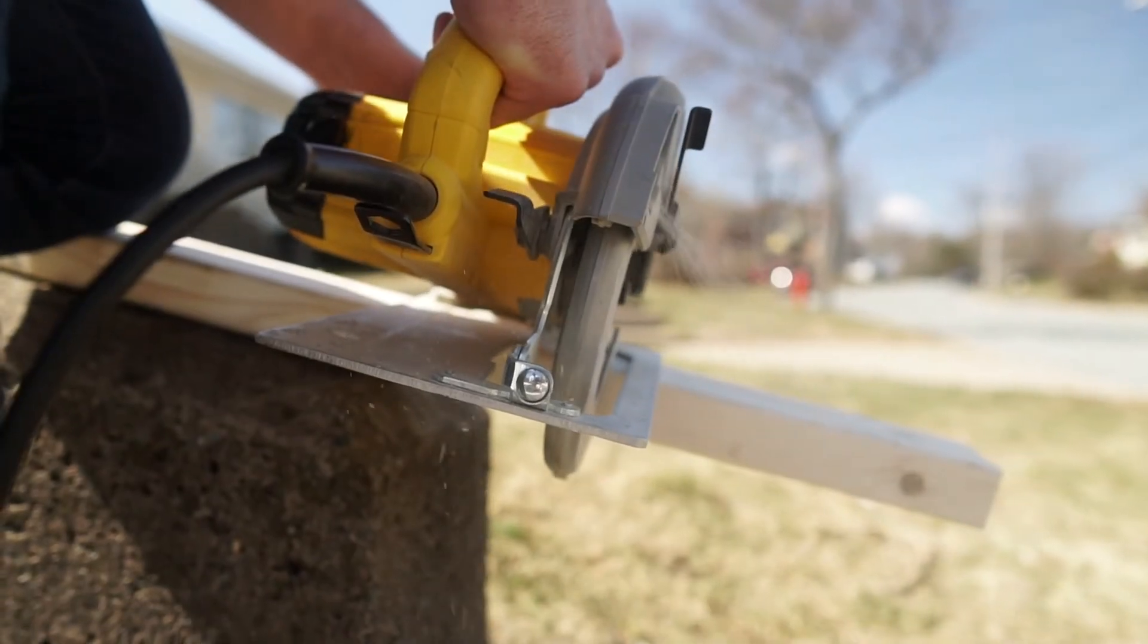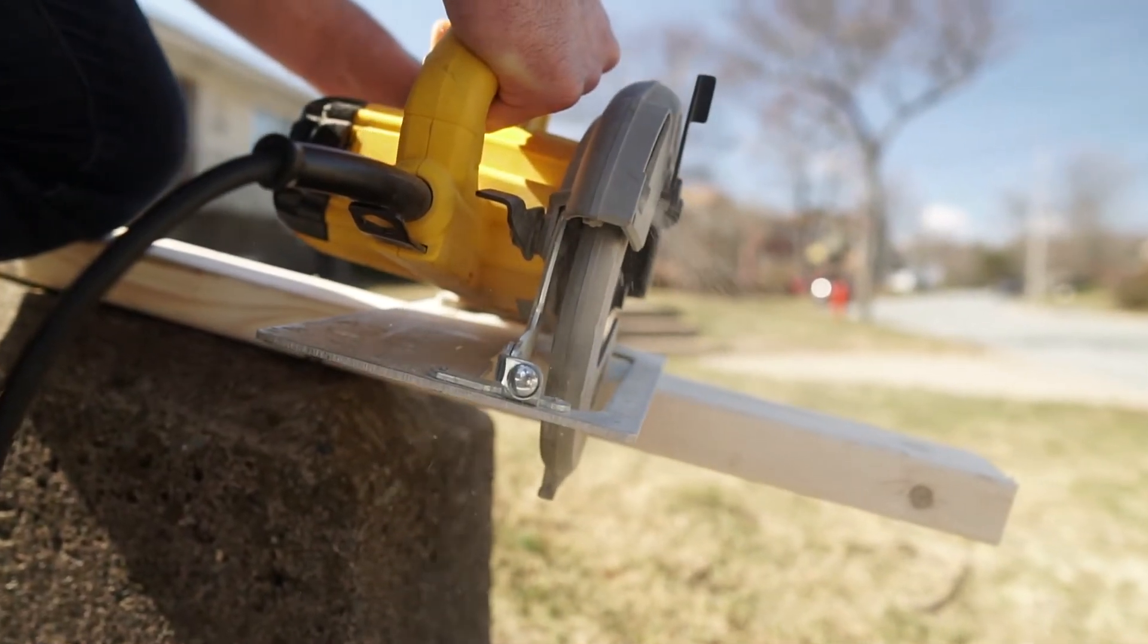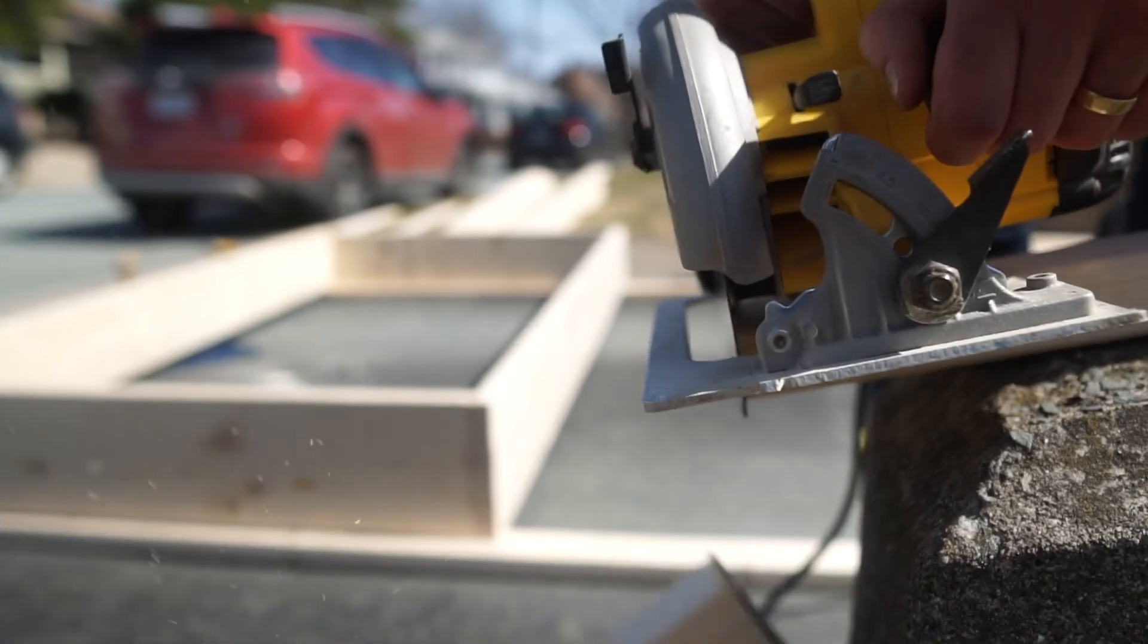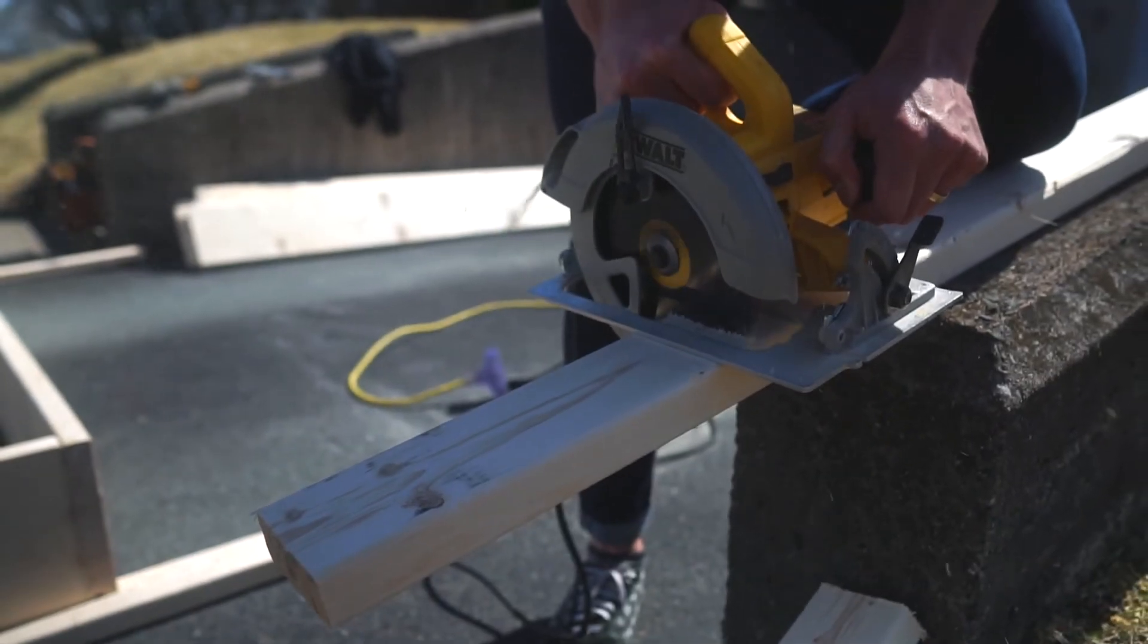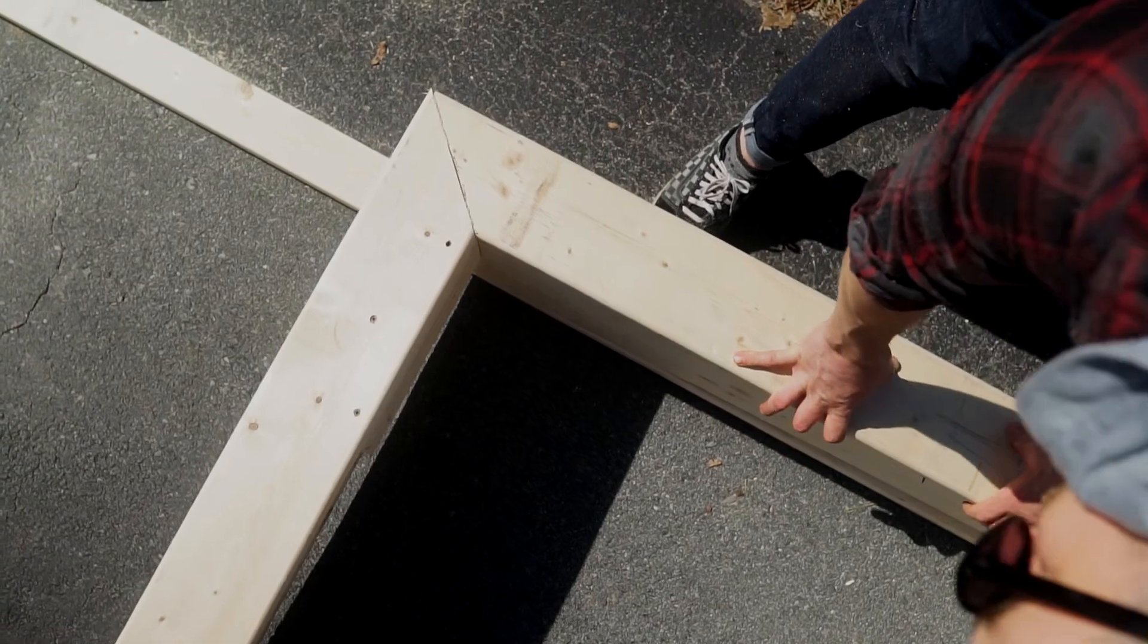Next, cut your 2x4 into 8 pieces. Don't worry too much about the exact lengths. We're going to use these 8 pieces to support our optional picture frame border.